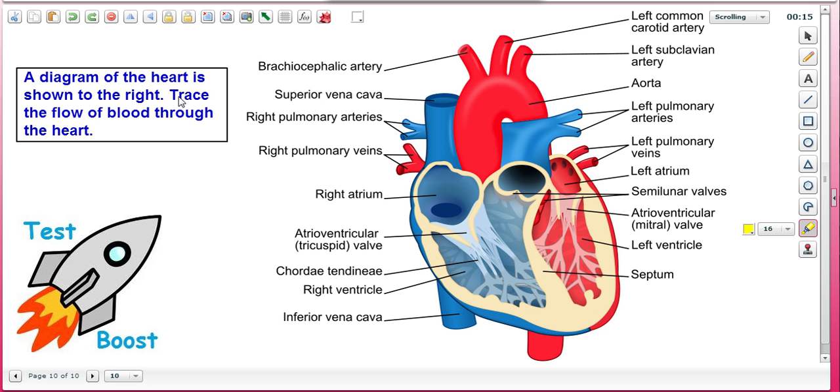Let's trace the flow of blood through the heart. We see a diagram of the heart here. Let's start with deoxygenated blood coming to the heart via the superior and inferior vena cava. So I'll give these a one.